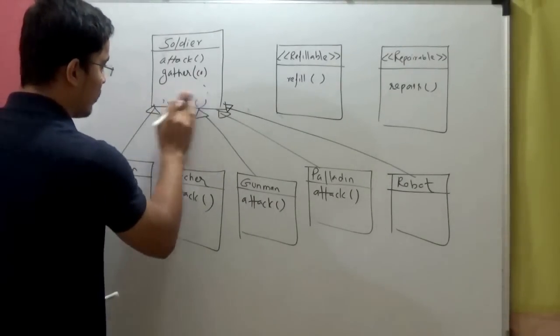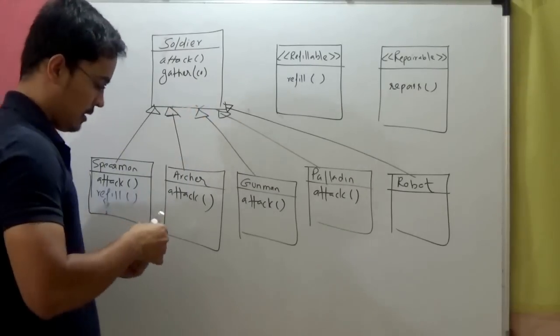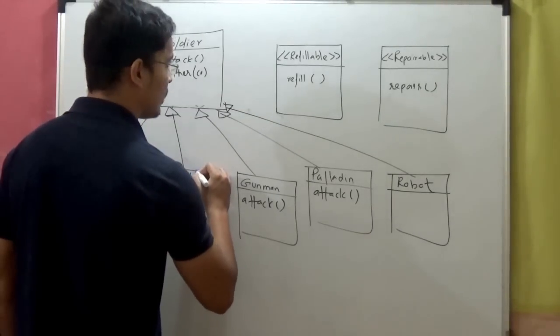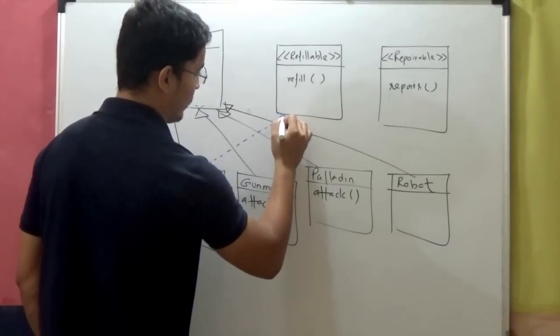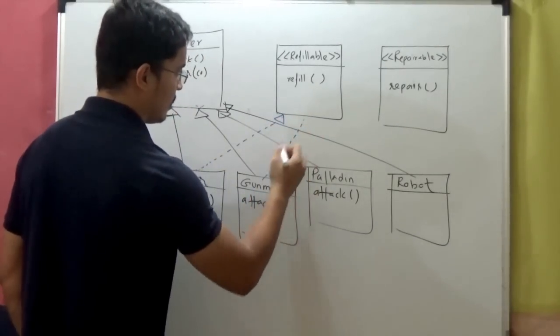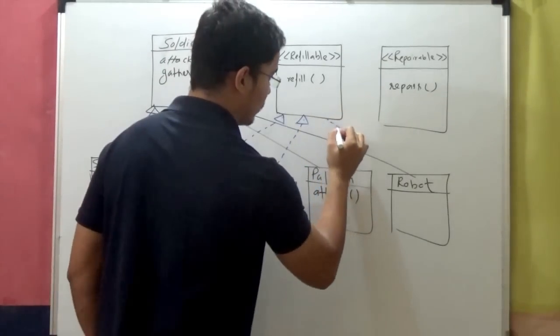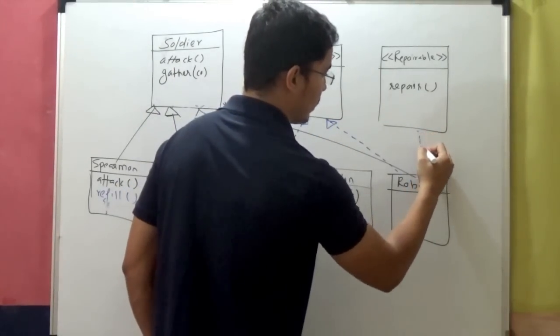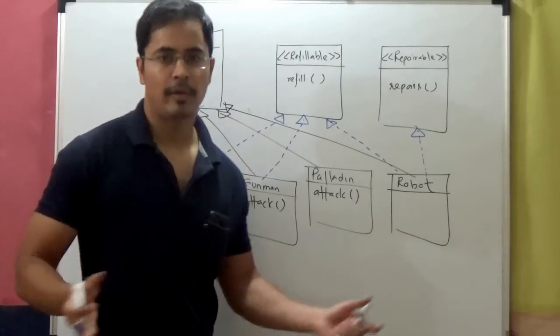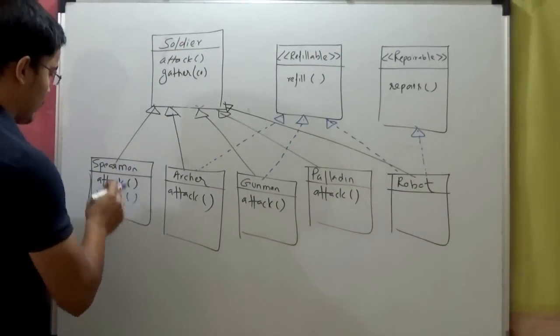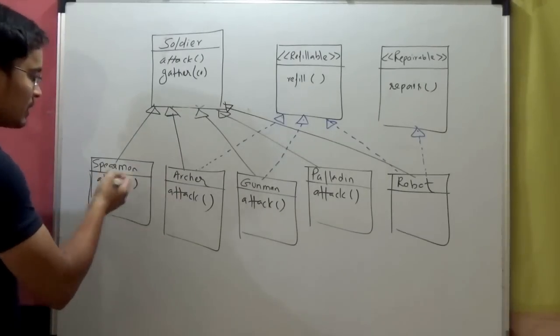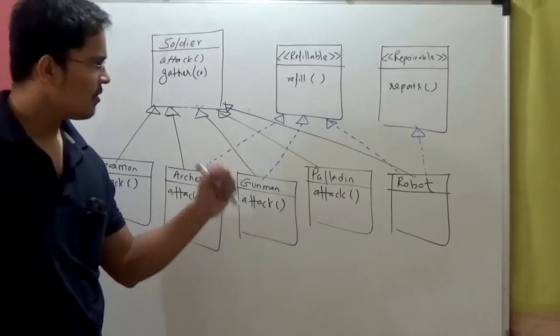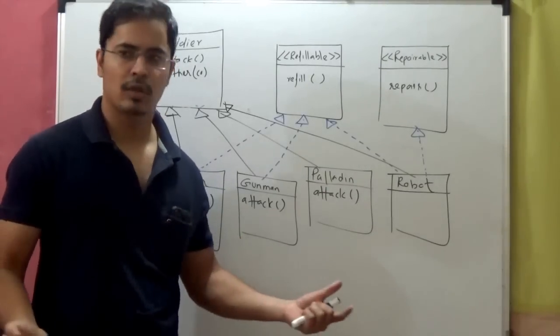Now, instead of, I'll take out this behavior from here. And the classes which want the refillable behavior, Archer, so Archer will implement this interface. Gunman requires refill. Robot also requires to refill his weapons. And robot also requires to be repaired in case it gets damaged while fighting. Now, we don't need to provide any implementation for refill in Spearman and Paladin because they are not implementing this interface. Sounds like a better design, better way of solving that problem.